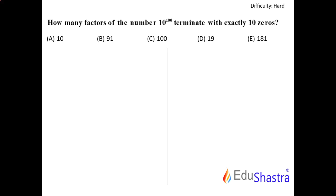Hello and welcome to Edushastra. Let's begin with this problem. We have a problem here on number systems, number theory. The problem asks us, there is this number 10 raised to 100. How many factors for this number will terminate with exactly 10 zeros?